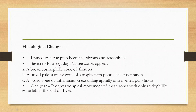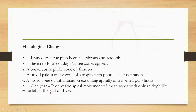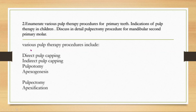Histological changes with formocresol: immediately, the pulp becomes fibrous and acidophilic. After seven to fourteen days, there are three zones: the first is a zone of fixation, then a zone of atrophy with poor cellular definition, then a zone of inflammation extending apically into the normal pulp tissue. After one year, there is progressive apical movement of these zones, with only the acidophilic zone remaining at the end of one year.